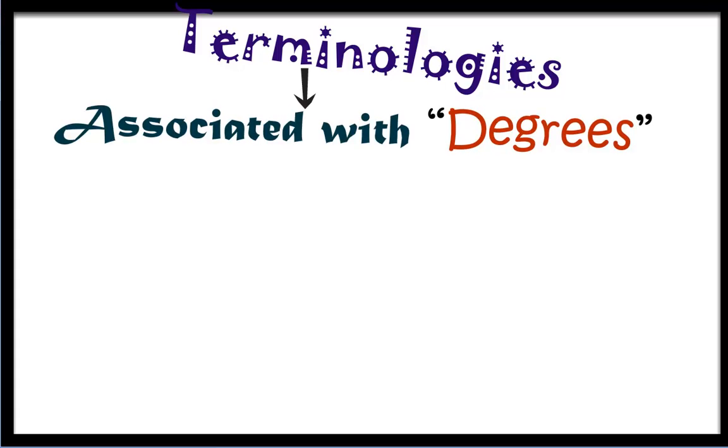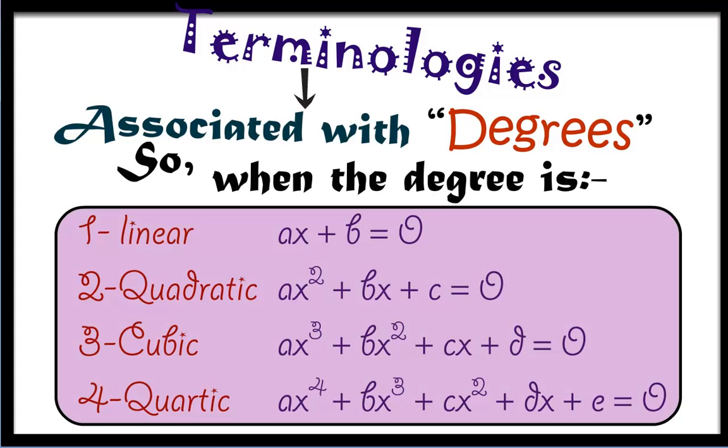Now let's move on to some terminologies associated with degrees. When the degree is 1, linear equation. When the degree is 2, quadratic equation. When the degree is 3, cubic equation. When the degree is 4, biquadratic or quartic equation. Now let's start by recognizing some quadratic equations.